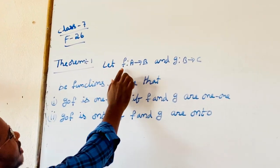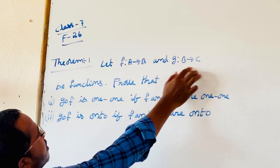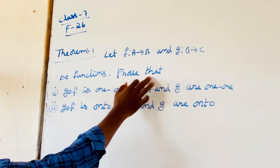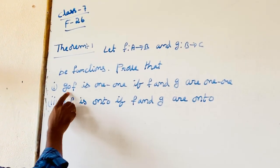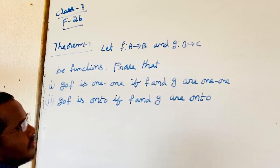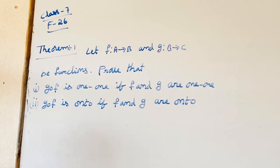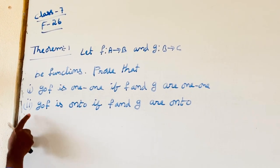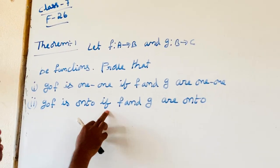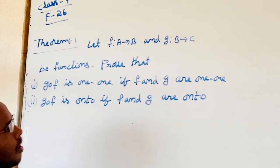Theorem 1: Let F map A to B and G map B to C be functions, so that G∘F is 1-1 if F and G are 1-1. Second: G∘F is onto if F and G are onto.